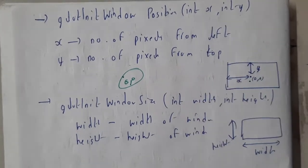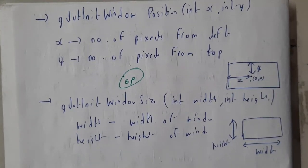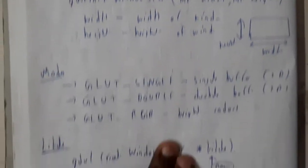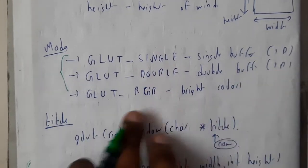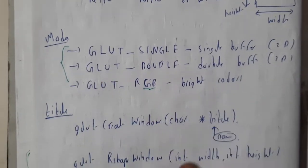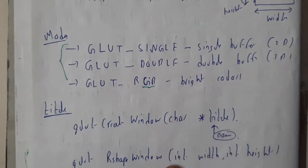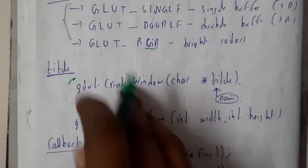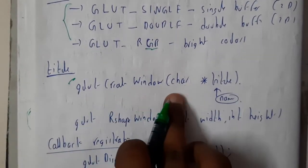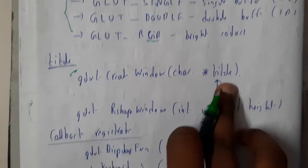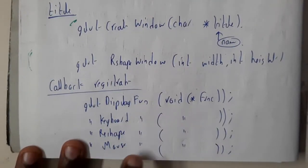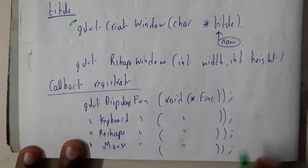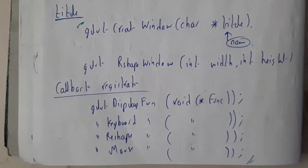We will also be using some modes - GL_SINGLE for 2D and DOUBLE for 3D, and RGB for getting bright colors. For indicating the title we use glutCreateWindow(char *title). There are callback functions like glutReshapeWindow, display function, keyboard function, reshape function, and mouse function. These are the few important functions. Please practice one or two programs about GLUT, like drawing circles, lines, triangles - basic programs.